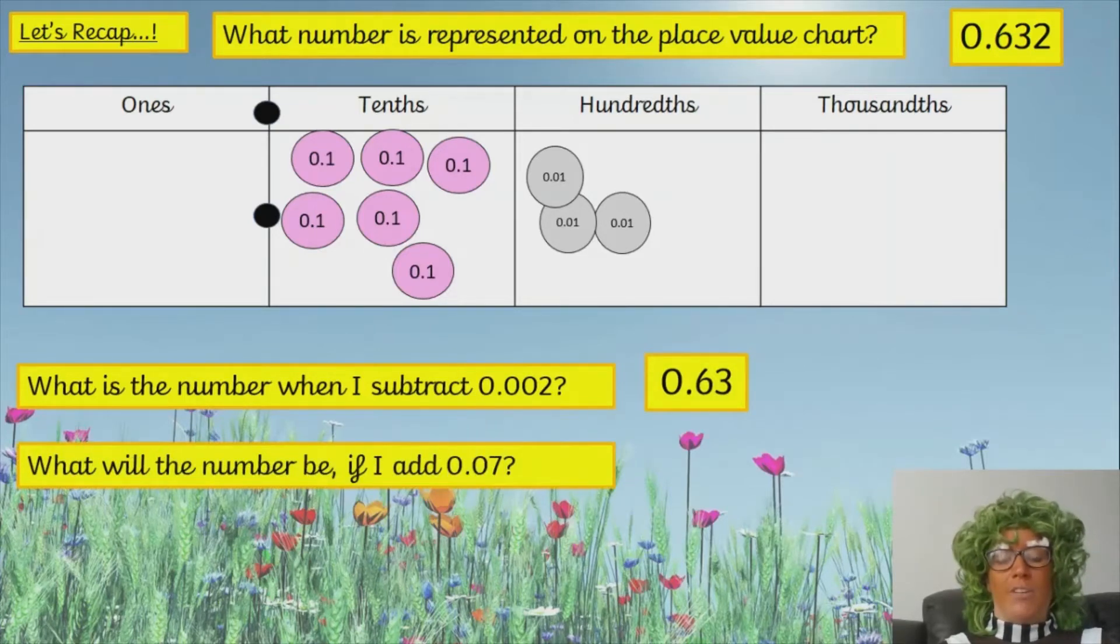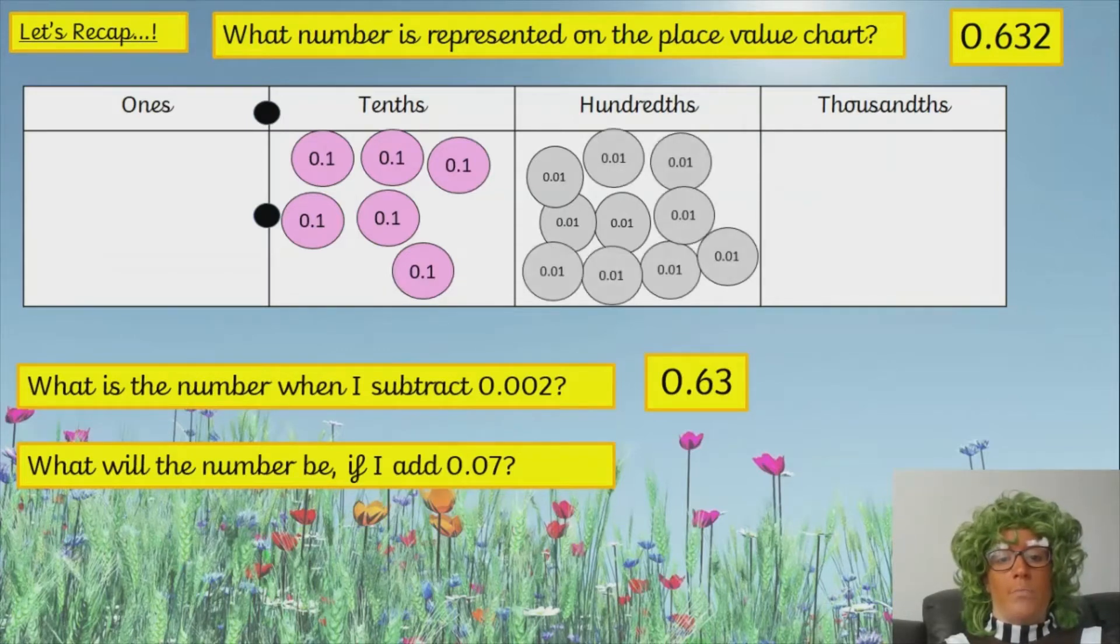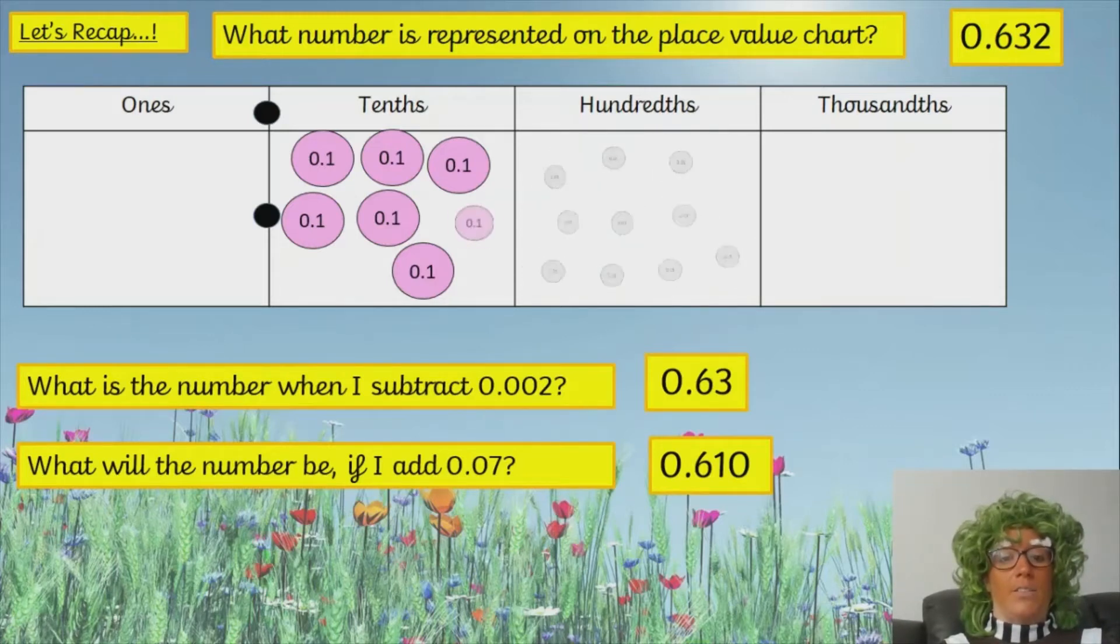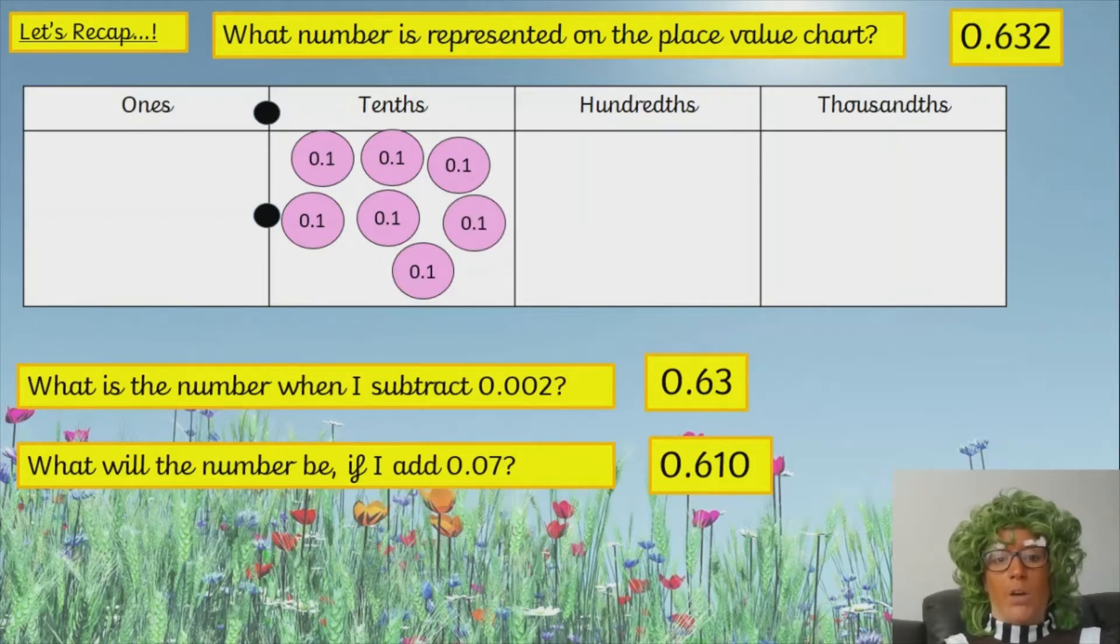What will the number be if I add 0.07 to this number? So, 0.07. We can see that they're hundredths. If we add seven hundredths, we've got 0.6, 1, 2, 3, 4, 5, 6, 7, 8, 9, 10. 0.610. Is that the right answer? No. Because we know that ten hundredths is the same as what? Ten hundredths is the same as one-tenth. So, we can exchange ten of those for one-tenth. So, we've got 0.7. Because we've got nothing else in the ones, nothing in the hundredths, nothing in the thousandths. So, it's just 0.7.